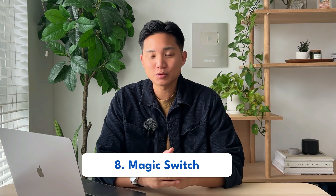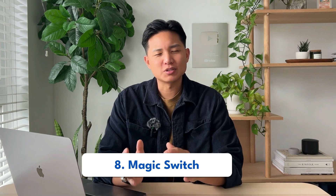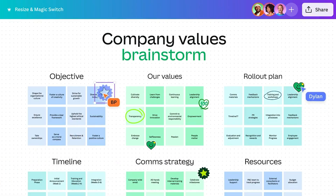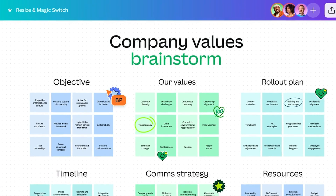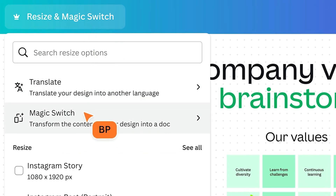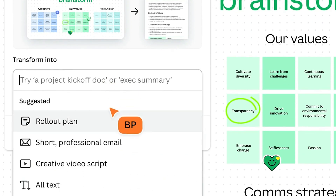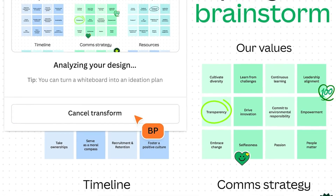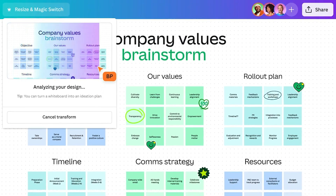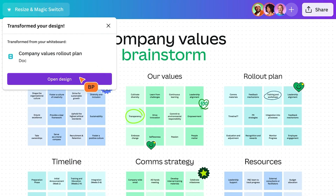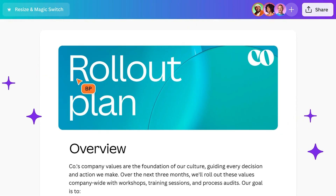Number eight is the Magic Switch tool. Similar to the others, this one helps you create different canvas sizes. For example, if you're creating social media templates, sometimes you want to create them in a square format, sometimes in a vertical format, sometimes in a horizontal format. With this tool, you can easily transform each design and create a different canvas size from it.